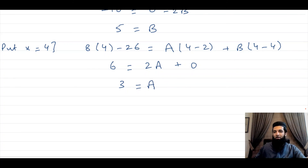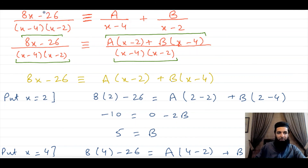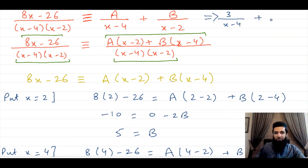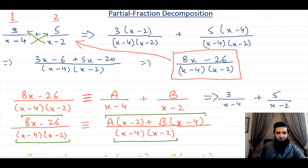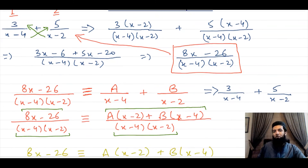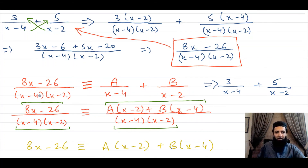We have found the values of A and B. Going back, we said this fraction can be decomposed into two parts. Since A equals 3, the first part is 3 divided by (x minus 4), and since B is 5, the second part is 5 divided by (x minus 2). These are the partial fractions. We can verify this — remember, this is where we started from: 3 over (x minus 4) plus 5 over (x minus 2). It's not always going to be this straightforward, because there are different cases with more complicated denominators. We'll discuss each of those in the next few videos.